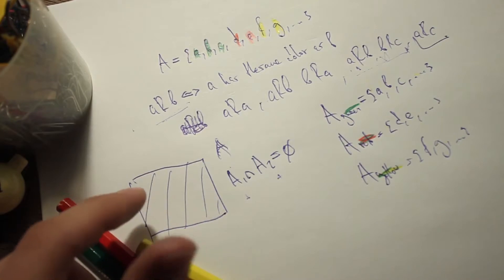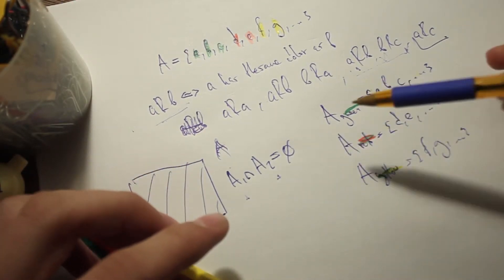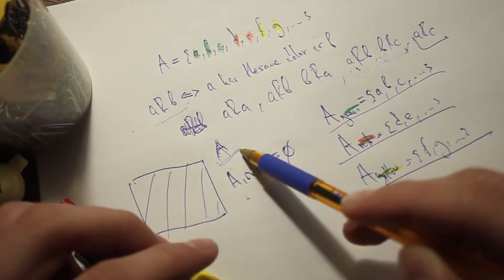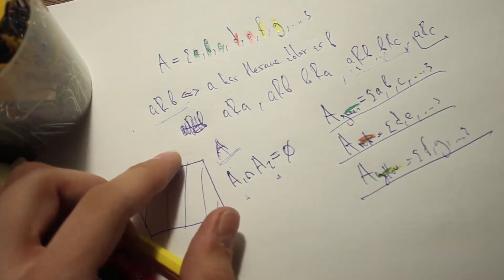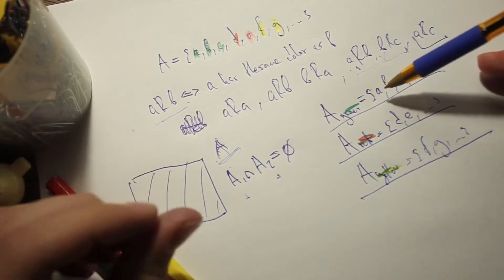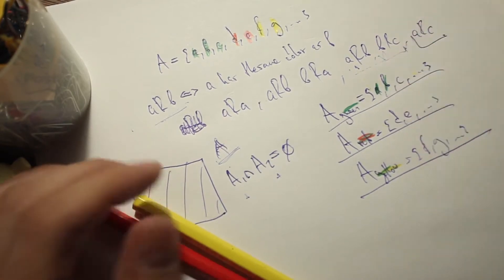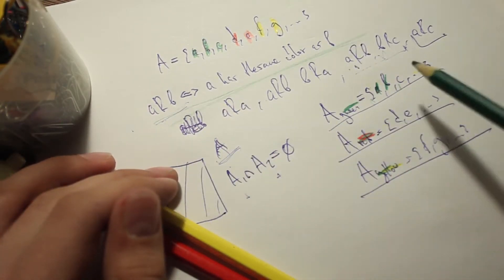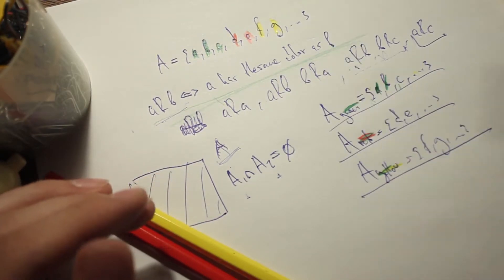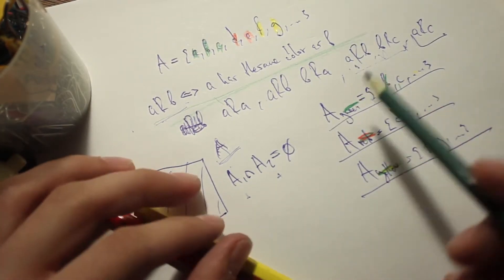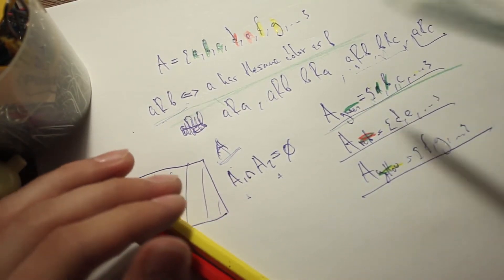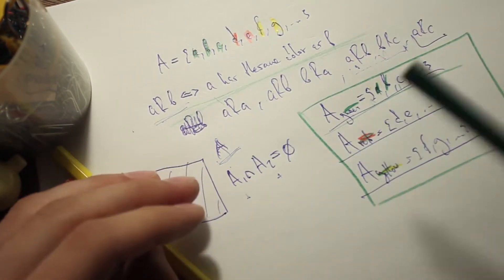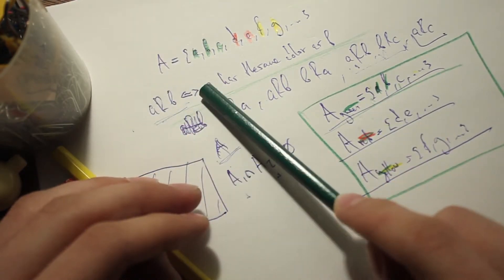These subsets of A are disjoint because red cars cannot be in the set of green cars. And those three subsets exist under this equivalence relation — A relates to B because they're both green and have the same color, so the relation applies. Those three subsets are the equivalence classes for set A under the relation 'A relates to B if they have the same color.'